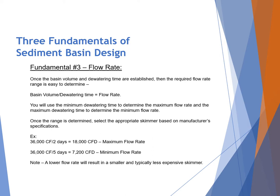The third fundamental is flow rate. Once basin volume and dewatering times are established, the required flow rate range is easy to determine: basin volume divided by dewatering time equals flow rate. Use the minimum dewatering time to determine maximum flow rate and the maximum dewatering time for minimum flow rate. For example, on a 36,000 cubic foot basin drained in two days, that's 18,000 cubic feet per day; in five days, 7,200 cubic feet per day. A lower flow rate often results in a smaller, typically less expensive skimmer.